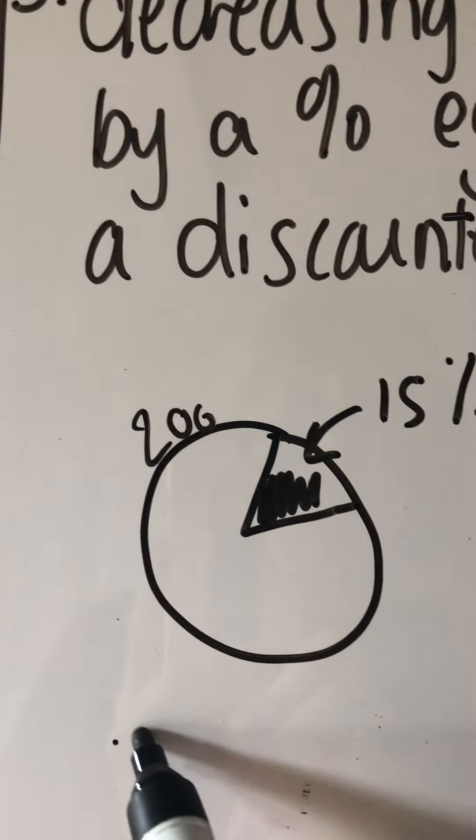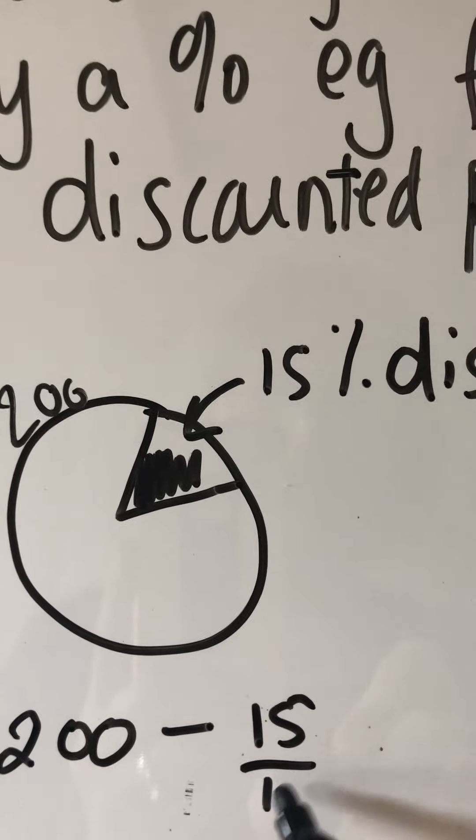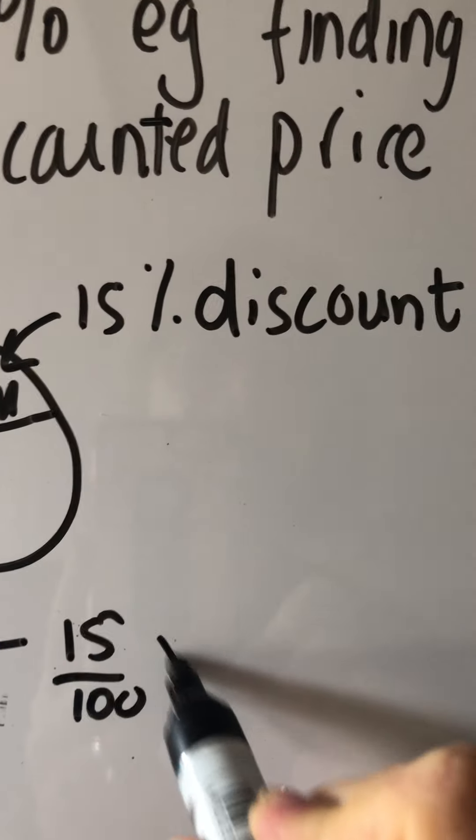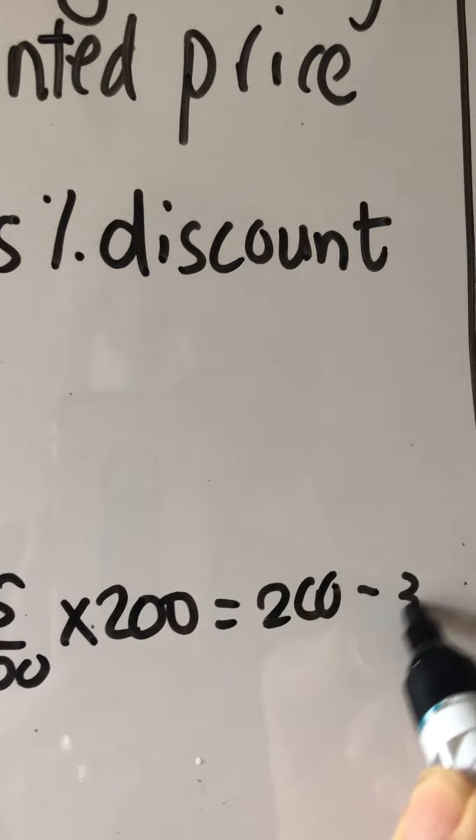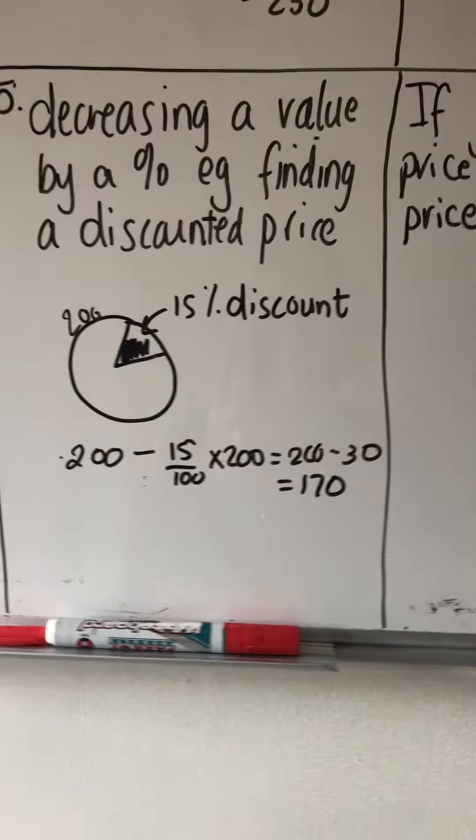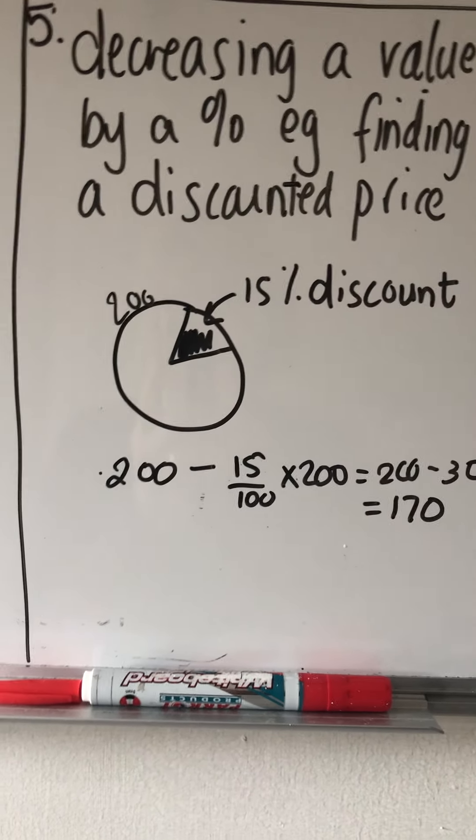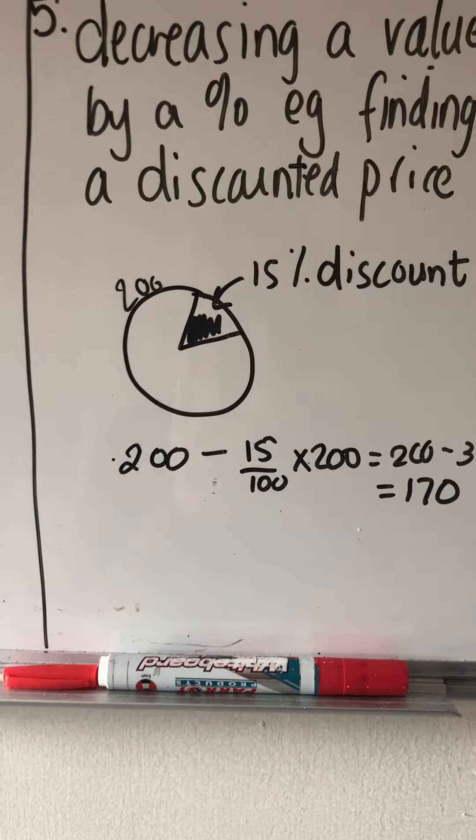You could go 200 subtract 15% times 200, and you will get 200 minus 30, and that will give you 170, which is the correct answer. You do pay 170 if you get a 15% discount on a 200 Rand item.